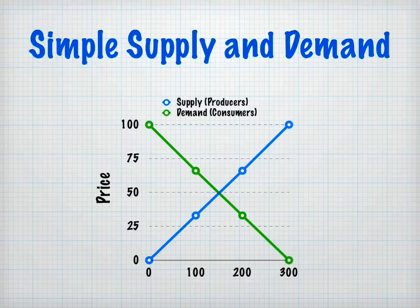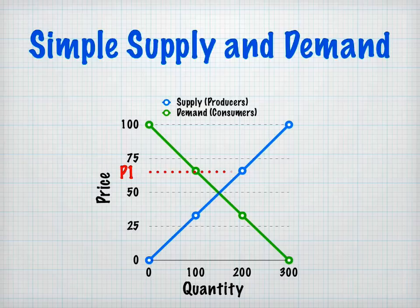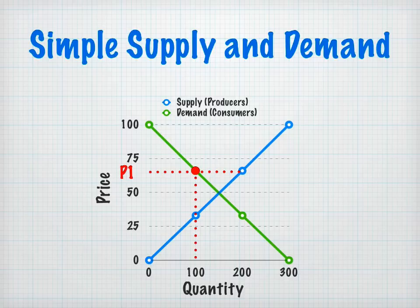We have price on our vertical axis and quantity on our horizontal axis. Now let's look at our first market price — let's call that $66. You can see two points here. The first point is on our demand curve. At $66, consumers are willing to consume or purchase — they're demanding 100 units of whatever good that is.